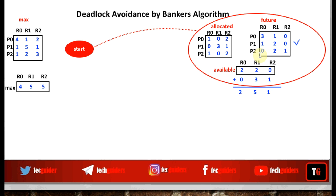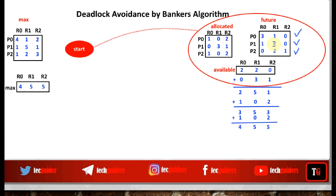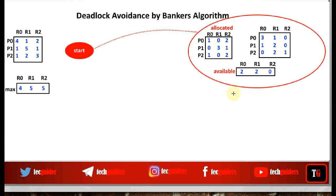With these increased resources, we cannot execute P0, but can we execute P2? Zero is less than two, two is less than five, one equals one — yes, we can execute P2. When P2 completes execution, available resources become 2,5,1 plus 1,0,2 = 3,5,3. Now can we execute P0? Three equals three, one less than five, zero less than three — yes. So we can execute all three processes in the sequence P1, P2, P0, confirming this state is a safe state.